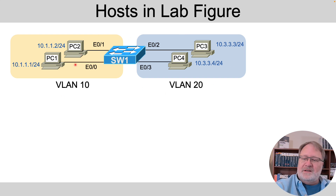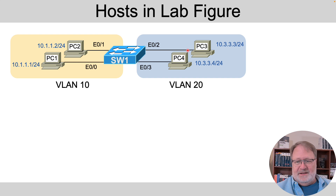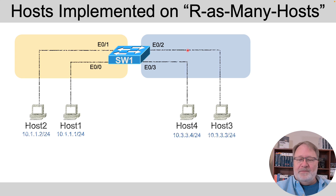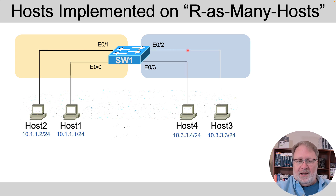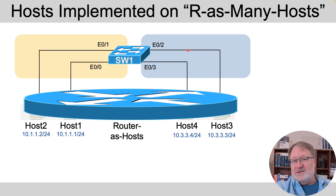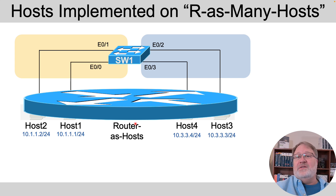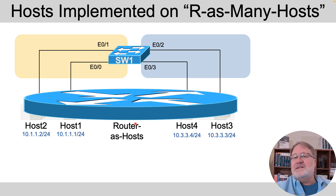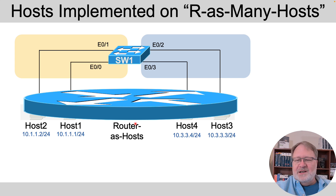In CML you'll see a diagram with four hosts connected to the side, and at the end you can ping from those endpoint devices to verify things match up with the VLAN design. However, because CML free limits you to only five active nodes at a time, I've replaced those four separate hosts with a single router. That one router counts as one node, and I've configured it to act like four different hosts from the perspective of how they forward packets.